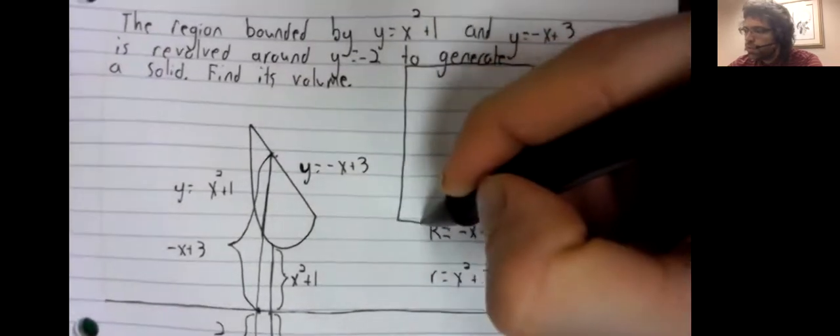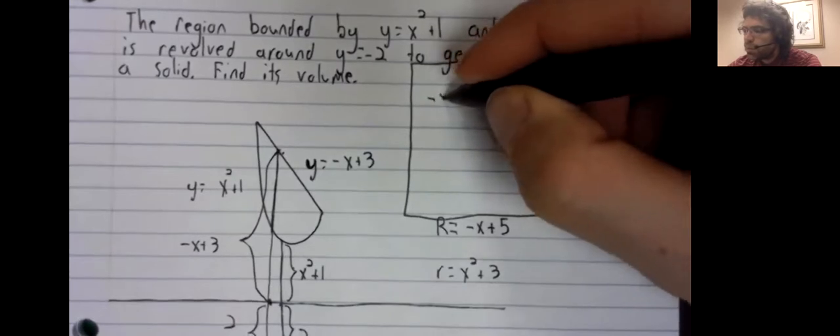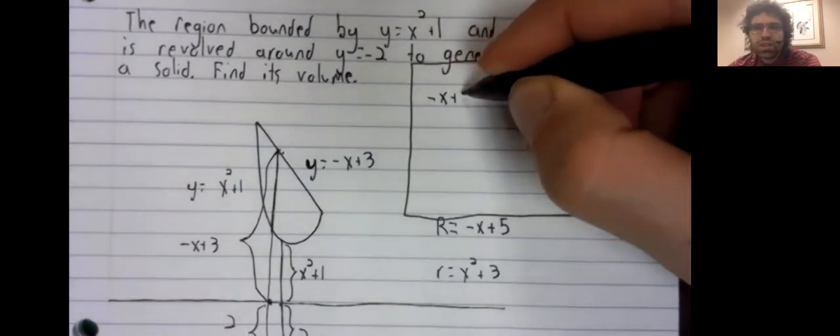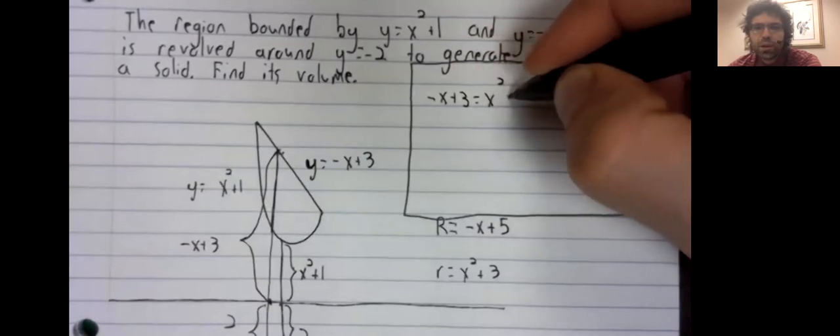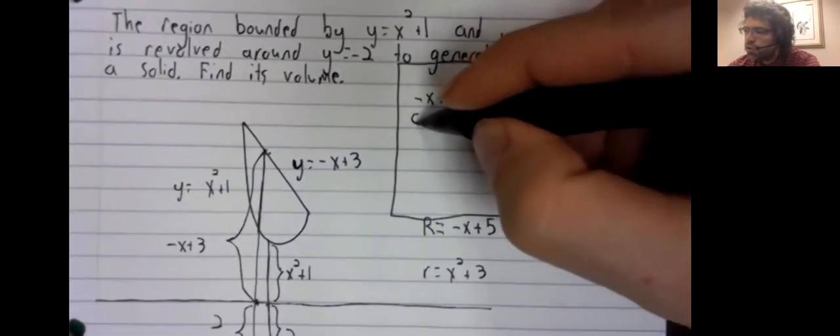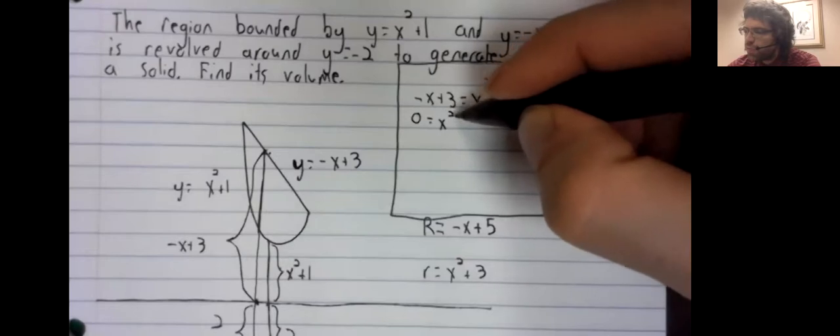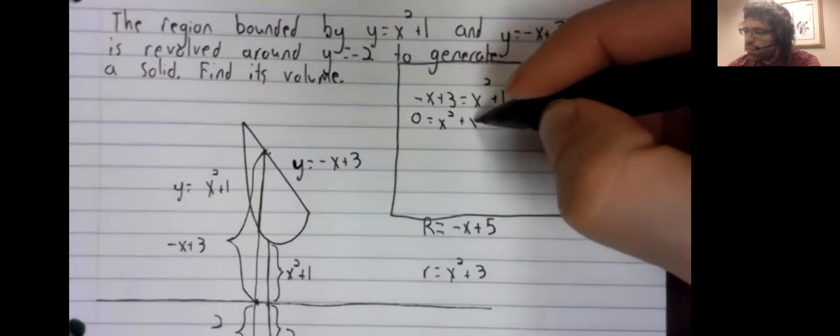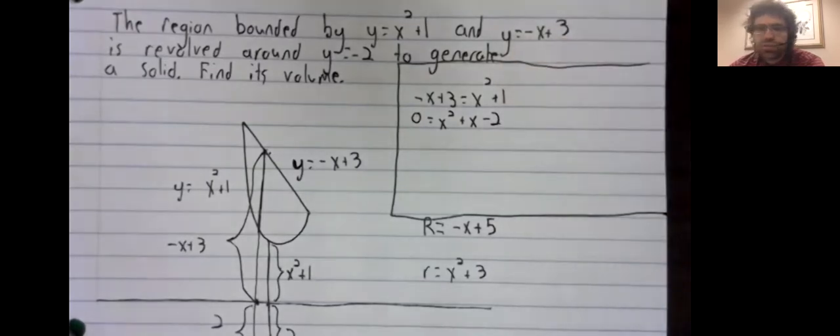So, where's that? Well, let's see. We'll set these curves equal to one another. Zero equals x squared plus x minus two.